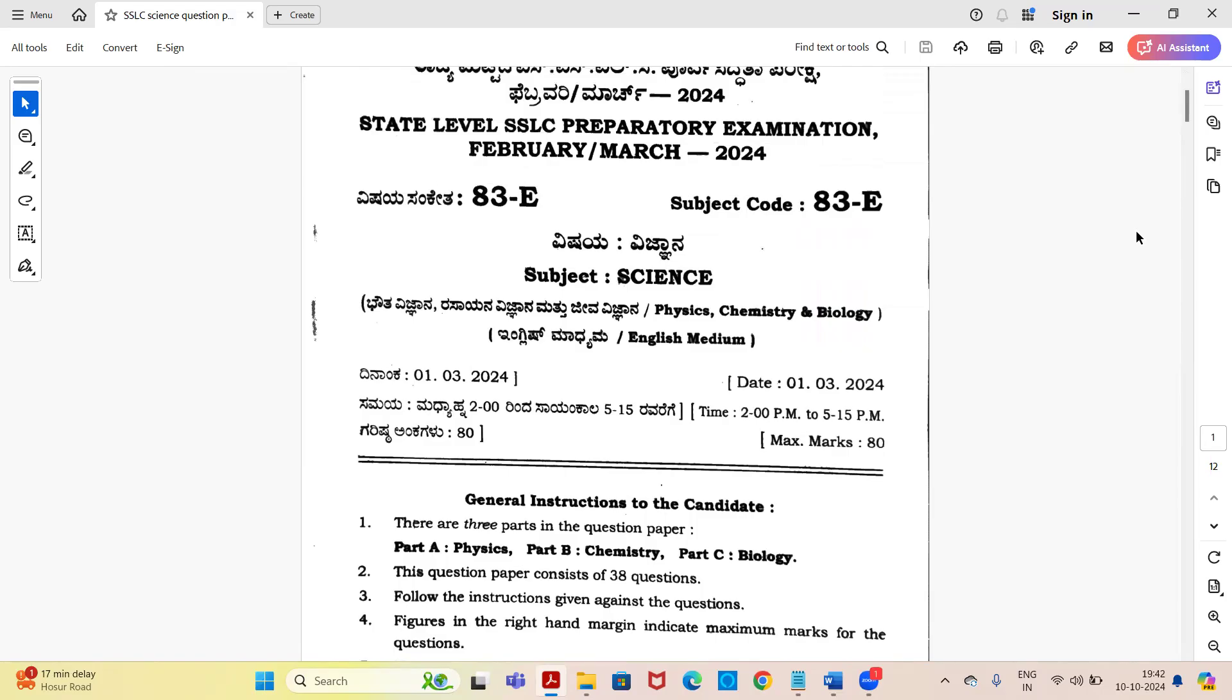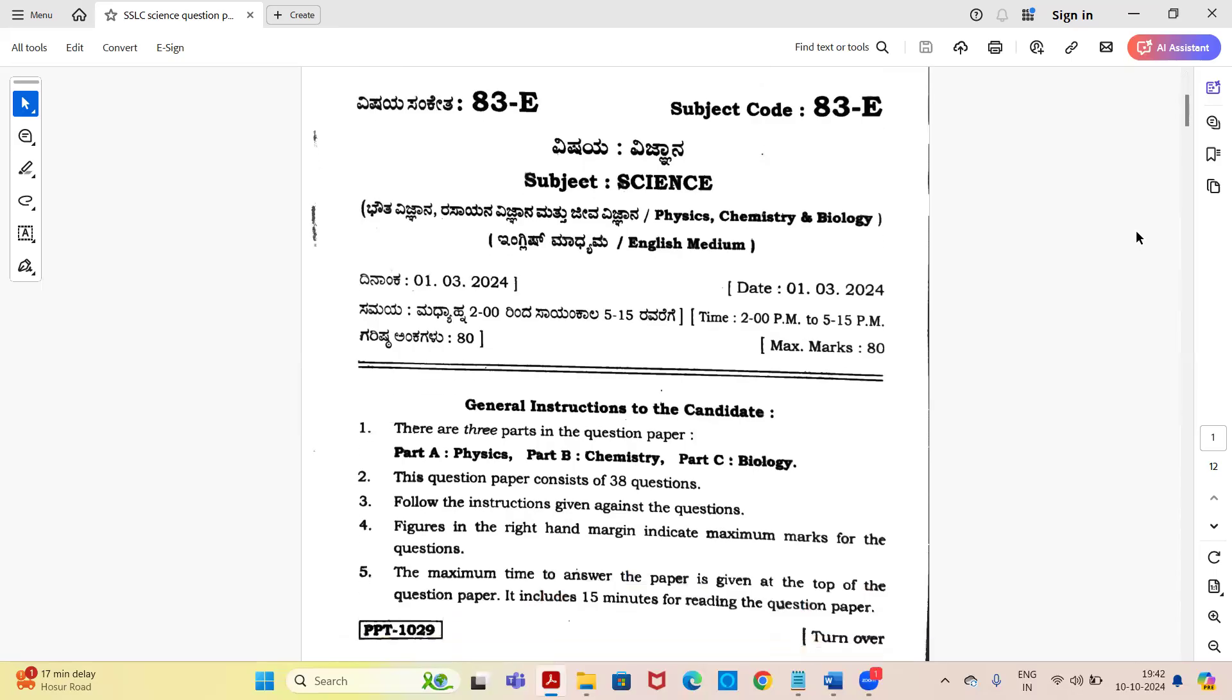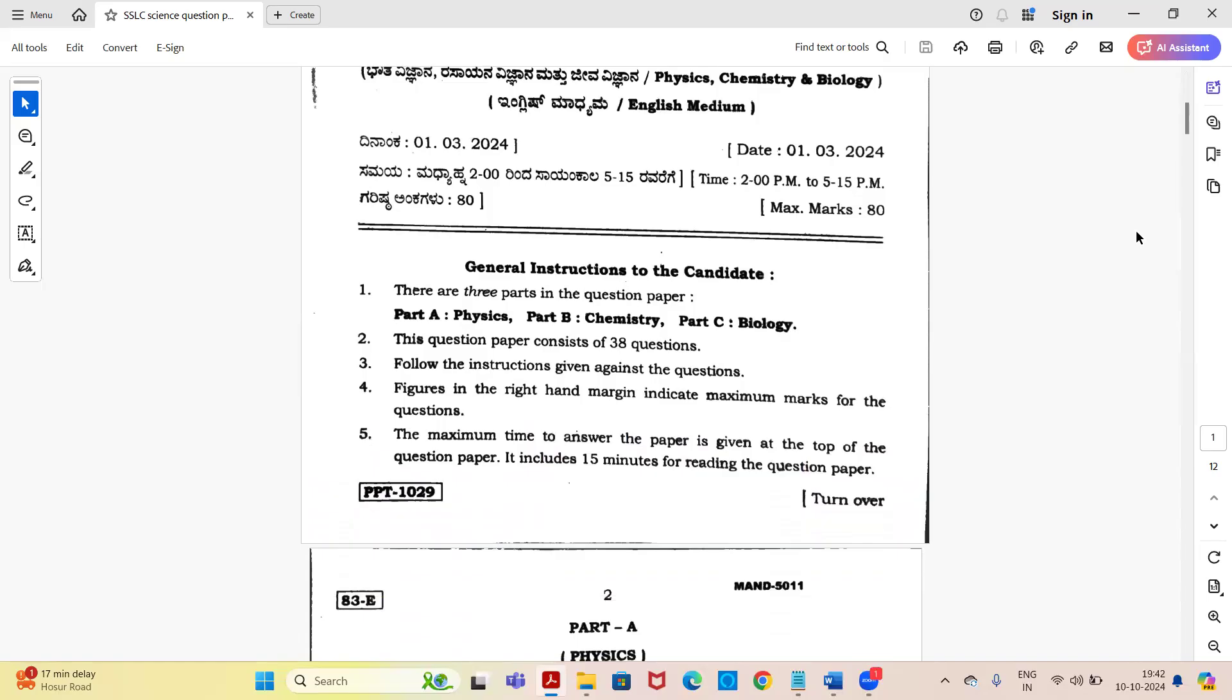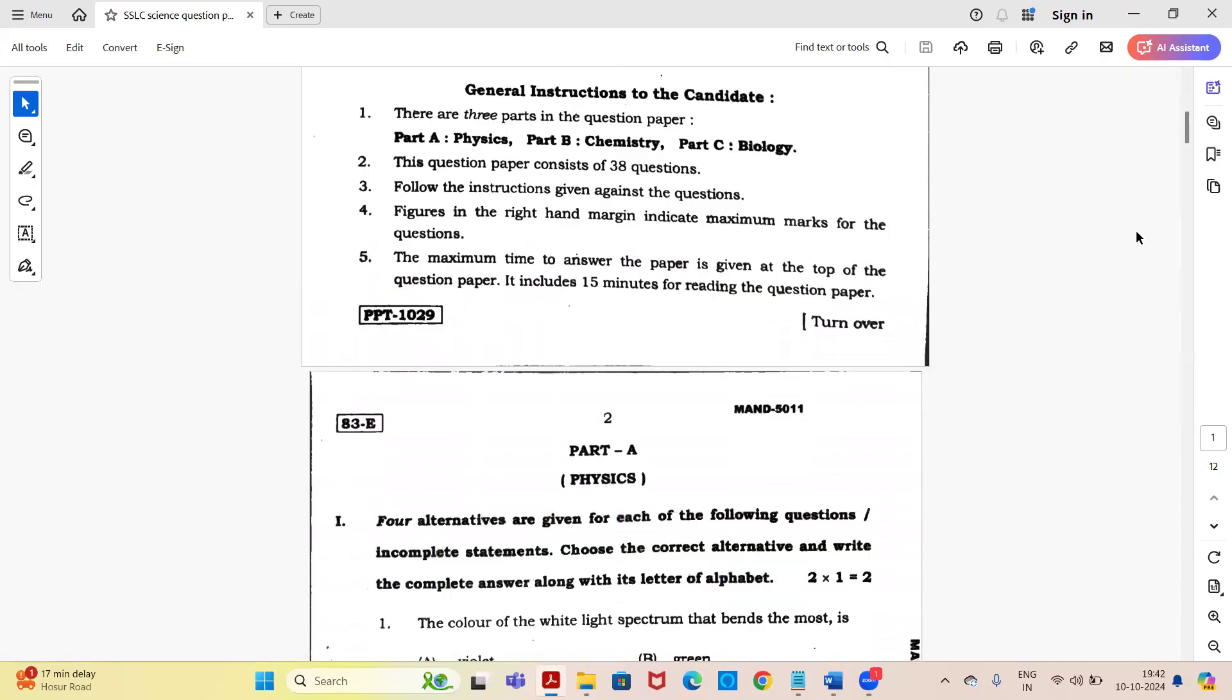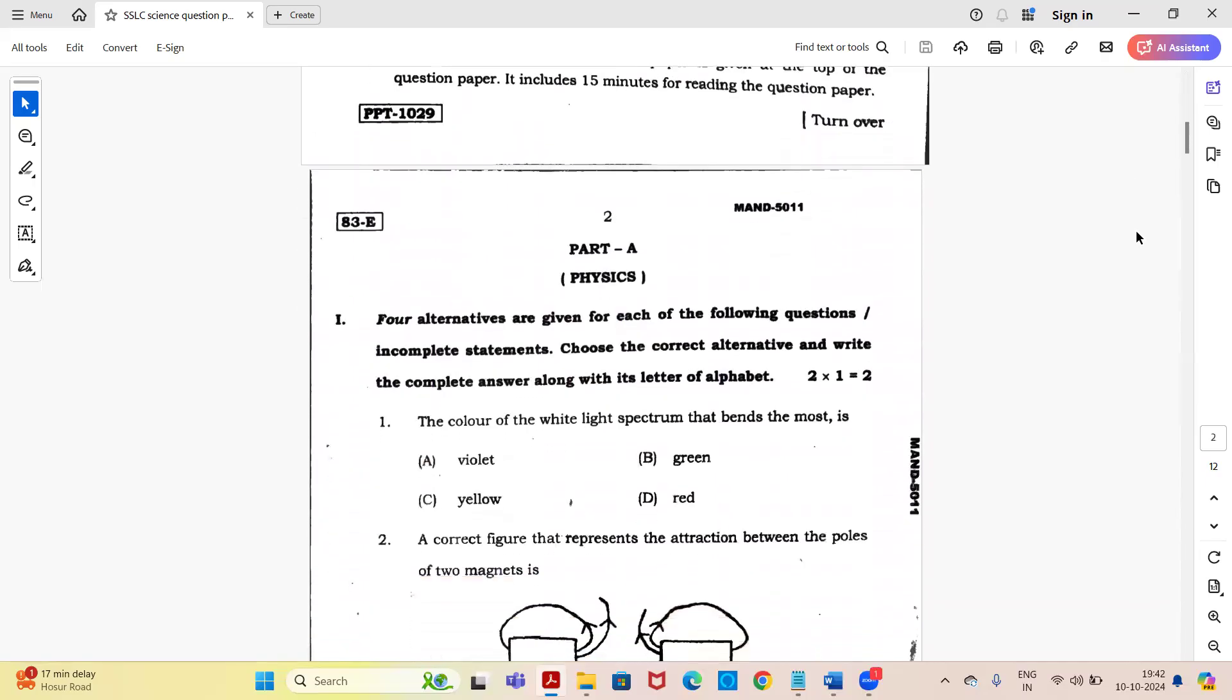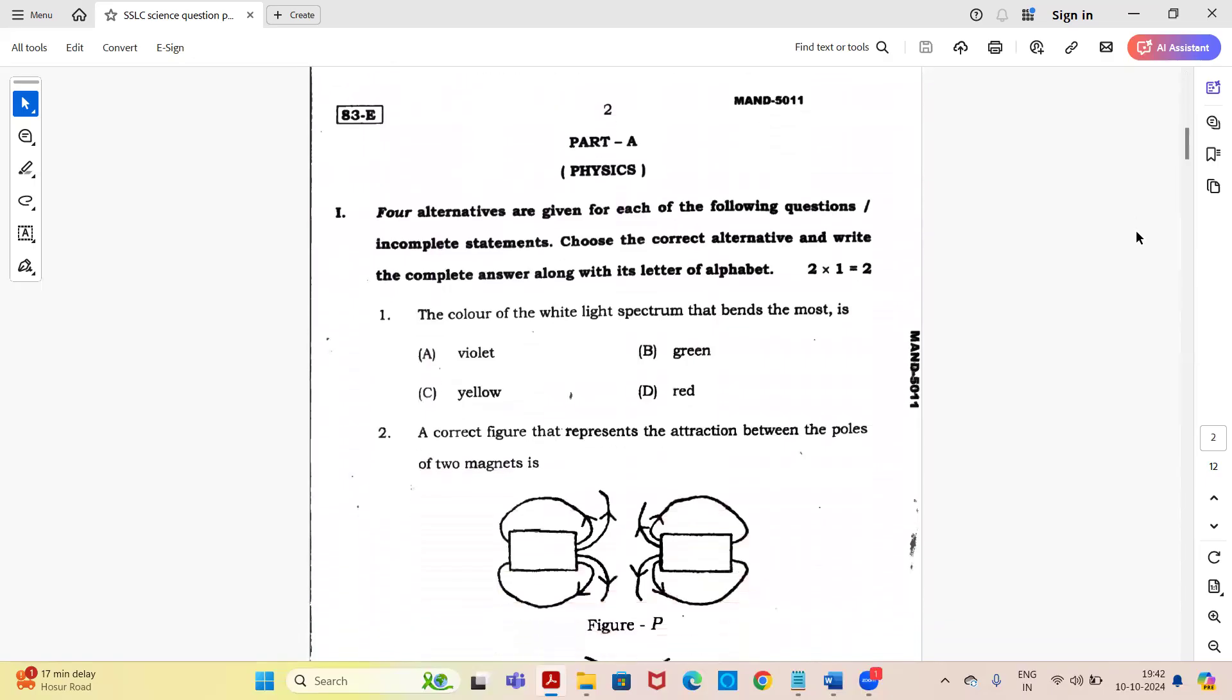This is state level SSLC preparatory examination question paper of February and March 2024 of science subject. It is of 80 marks with three parts: Part A physics, Part B chemistry, and Part C biology. You get three hours and fifteen minutes duration. This is just the question paper and we won't discuss answers, just to give you a clear idea of how the question paper is set.